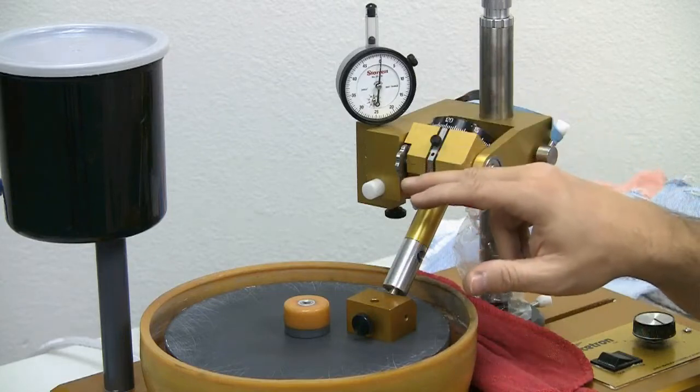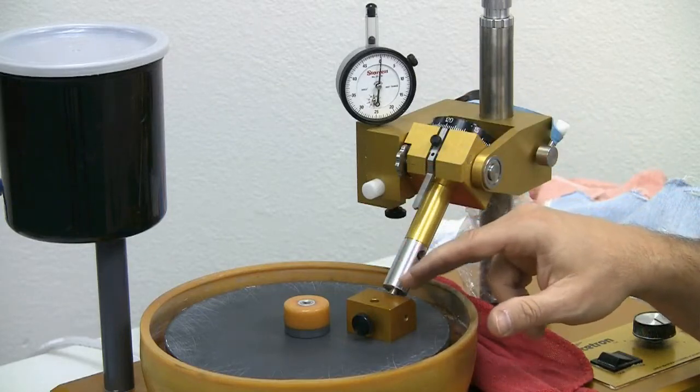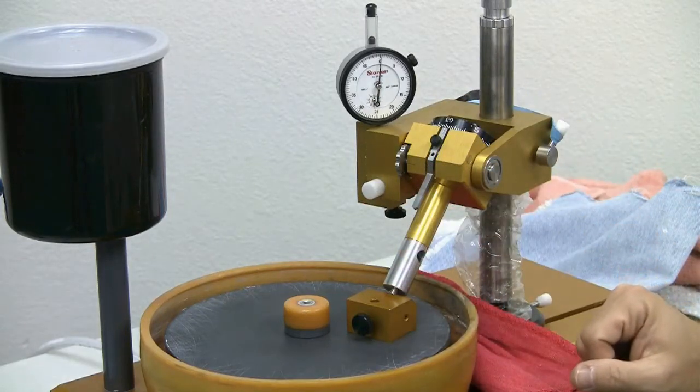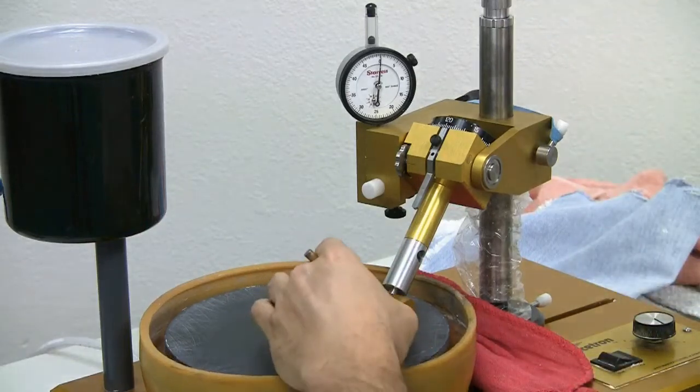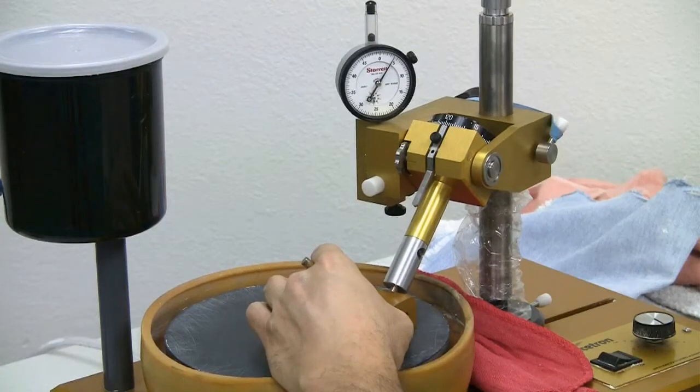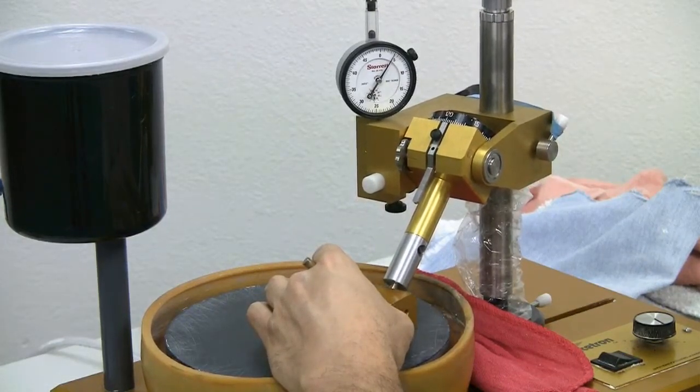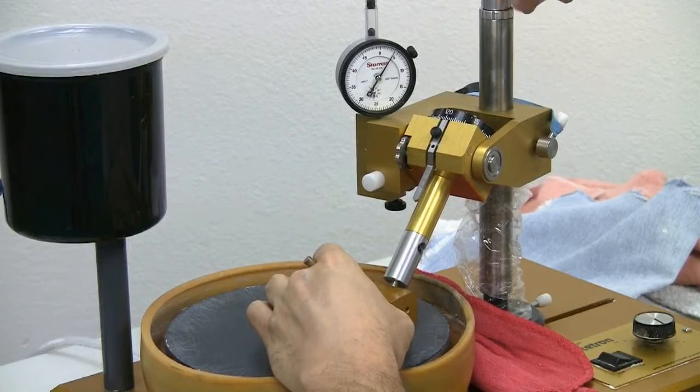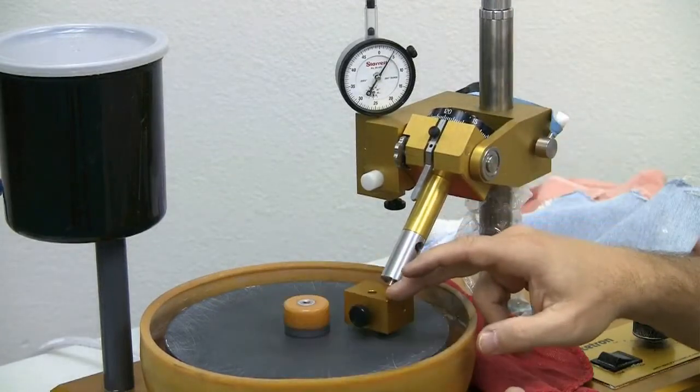This is also useful if we are having problems with the stair-stepping girdle after transfer. The quickest way of doing this is to support the 45 adapter and raise the faceting head about a quarter of an inch above the master lap.